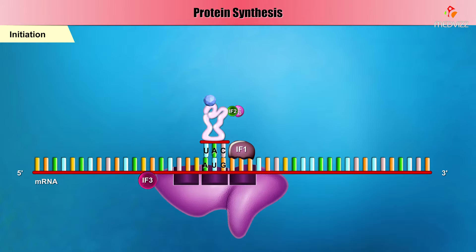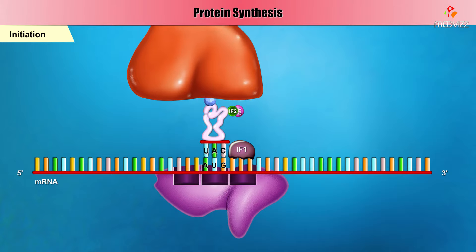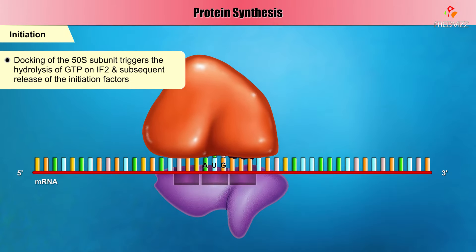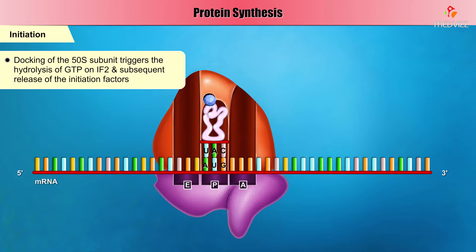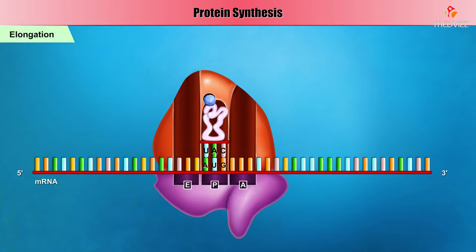Once the initiator tRNA is in place, IF3 is released. With the loss of IF3, the 50S subunit can dock on the 30S subunit. The docking of the 50S subunit triggers the hydrolysis of GTP on IF2 and the subsequent release of the initiation factors. The ribosome is now ready for elongation.